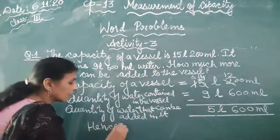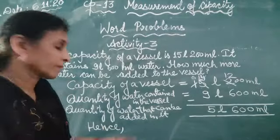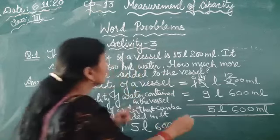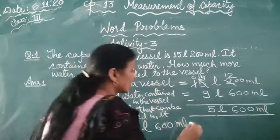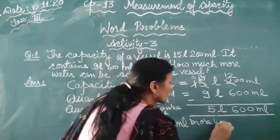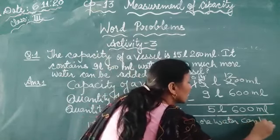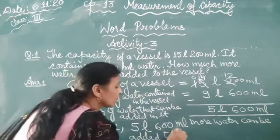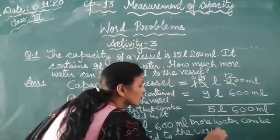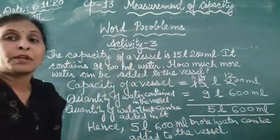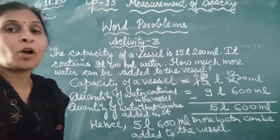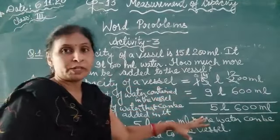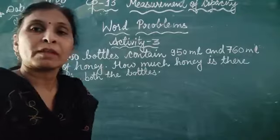Now we write the answer line: 5 litre 600 millilitre more water can be added to the vessel. Students, you understand how we solve the statement problem — write the statement this way and solve it accordingly.